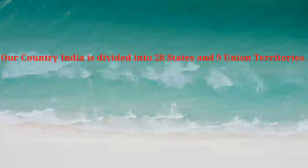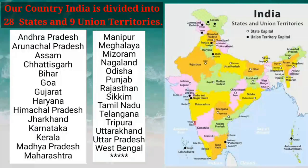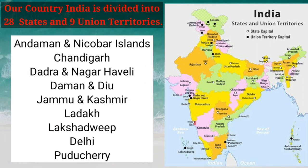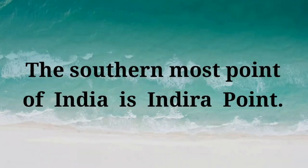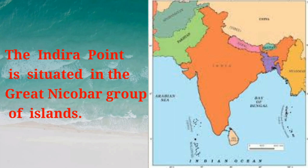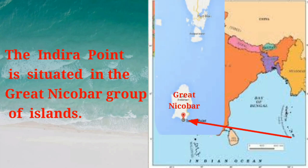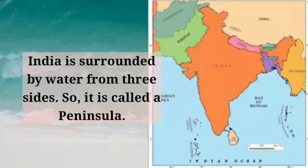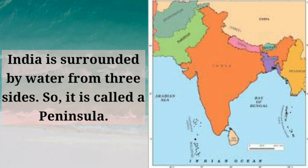Our country India is divided into 28 states and nine union territories. The southernmost point of India is Indira Point, situated in the Great Nicobar group of islands. India is surrounded by water from three sides, so it is called a peninsula.